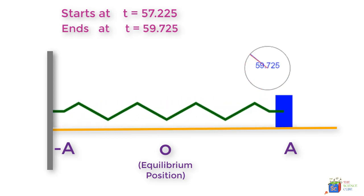It ends at T equal to 59.725 seconds. So the time period T is equal to 59.725 minus 57 seconds, which is equal to 2.5 seconds.